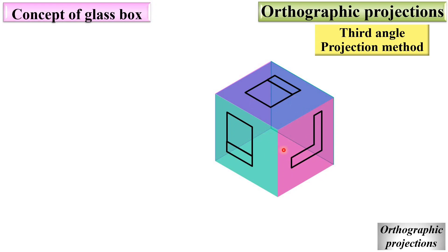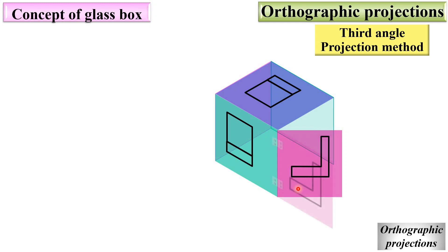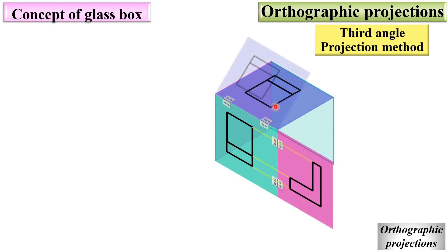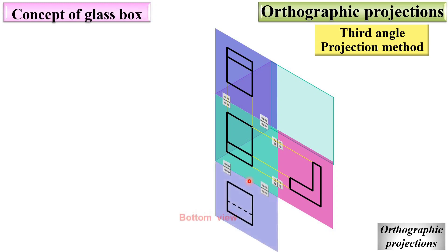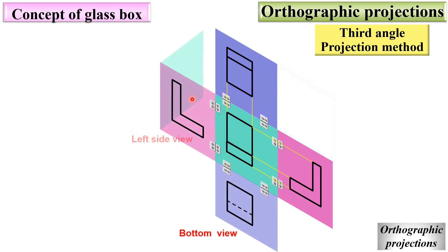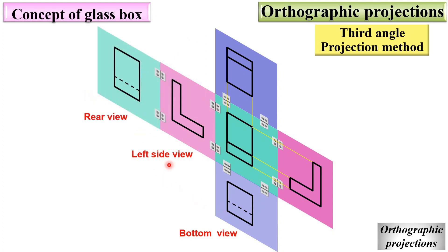Here is one glass box. To take the different views, open the glass box one side at a time — from here, then from here, then from here, and so on. Opening the glass box gives you the different views with their relative positions. According to the third angle projection method, here you can see the front view, the right hand side view, the left hand side view, the bottom view, and the top view.